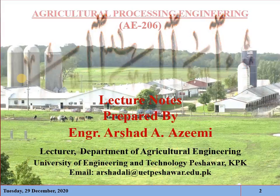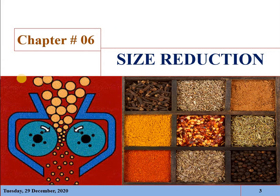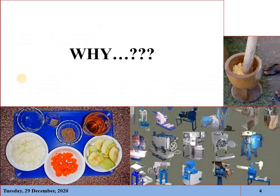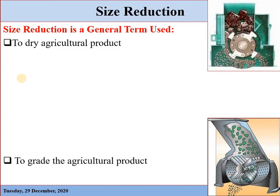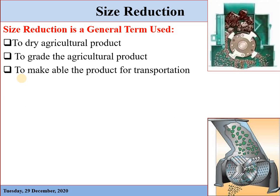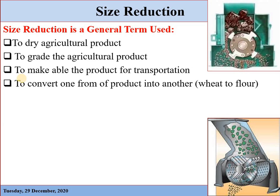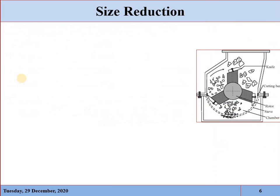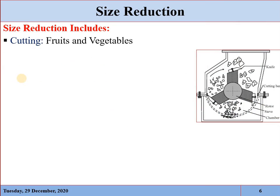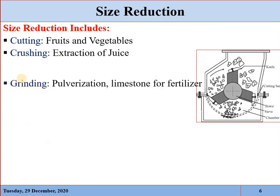As we were discussing the size reduction of agricultural products, in the previous lecture we discussed what size reduction is and why we reduce the size of agricultural products. Majorly, size reduction is used to grade the agricultural product into different categories, to make the product suitable for transportation, and to convert one form of the product into another form. Remember that size reduction is mainly a physical processing operation in which we are just changing the physical and mechanical properties — no chemical changes will occur in the agricultural product.